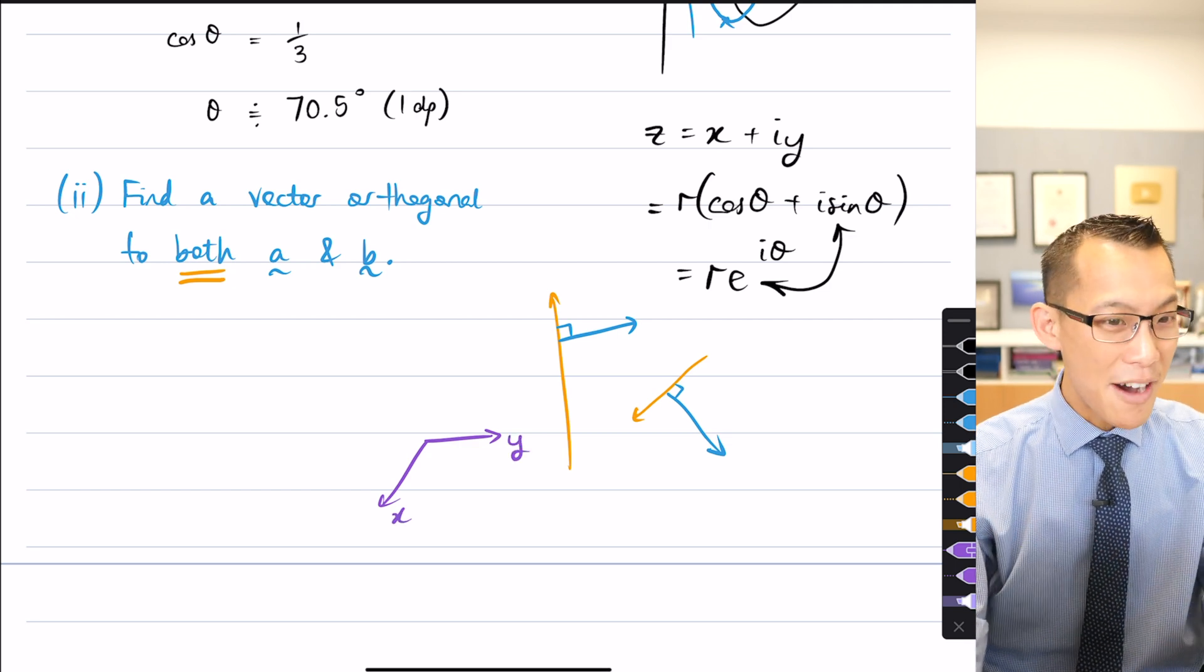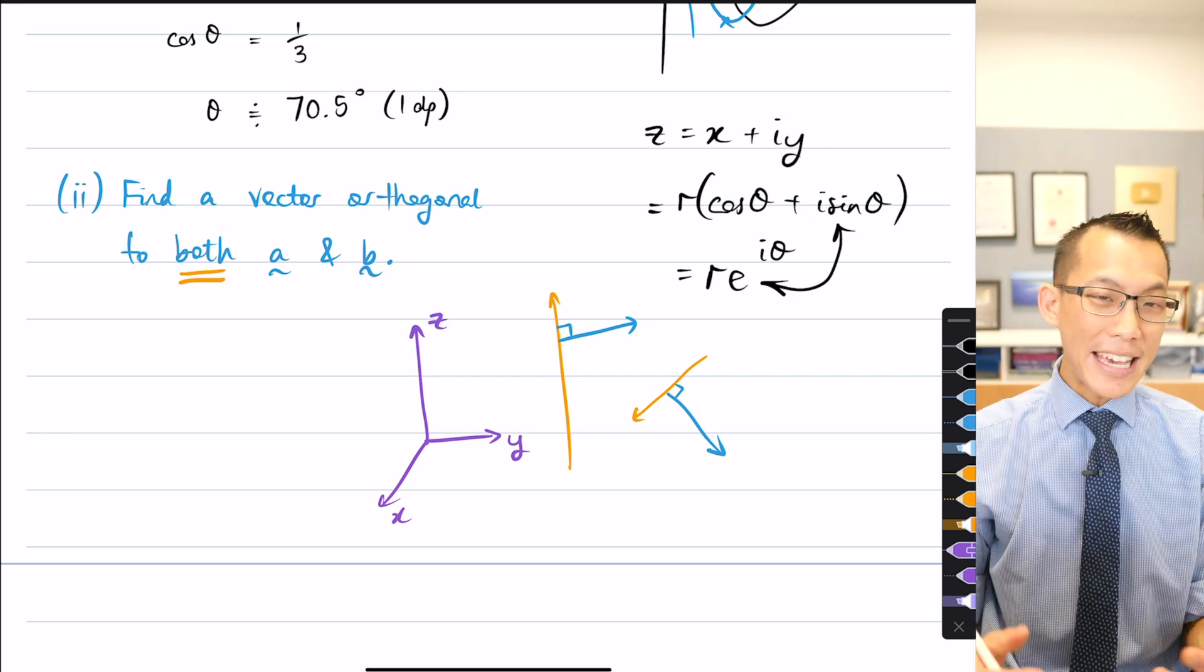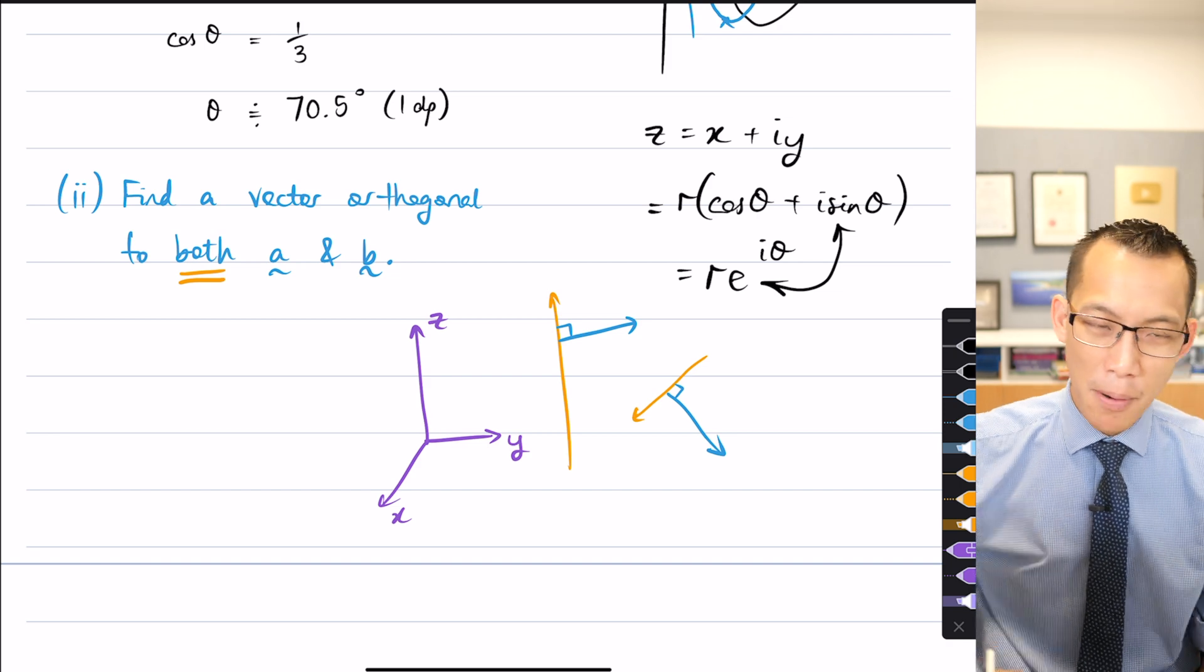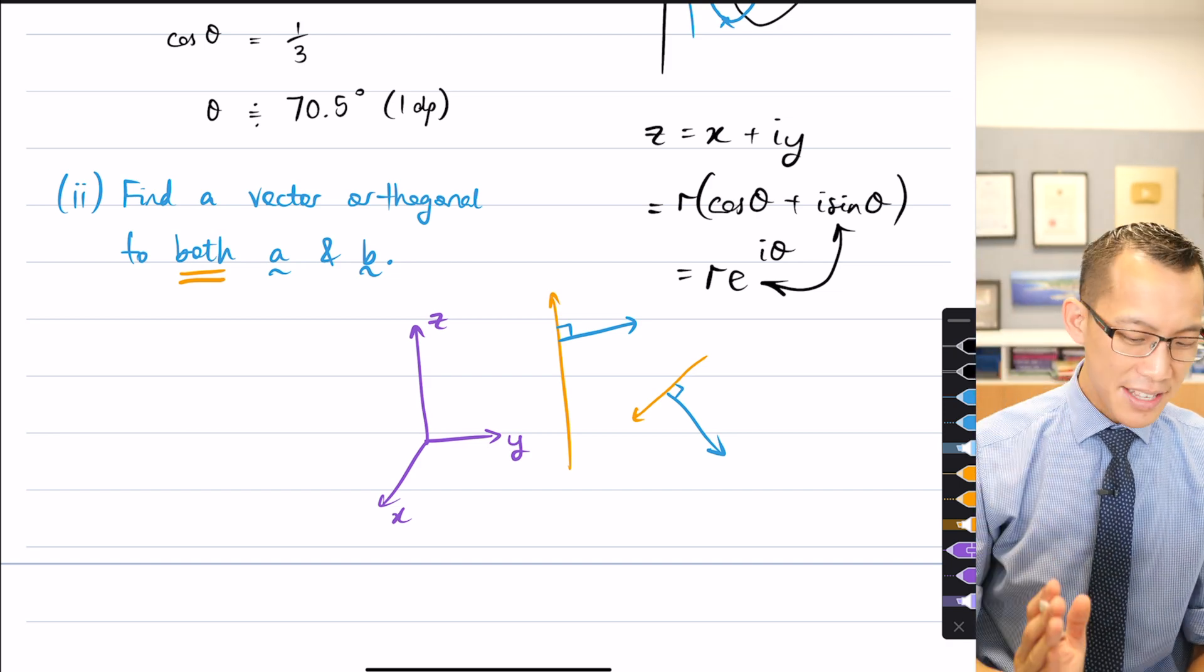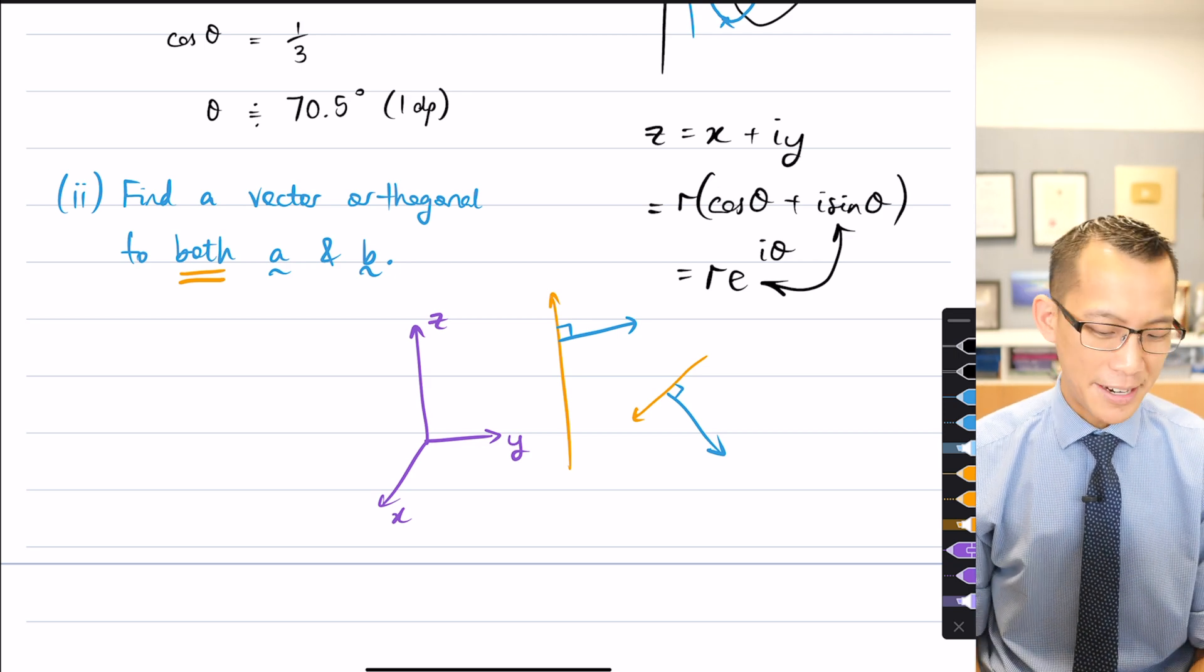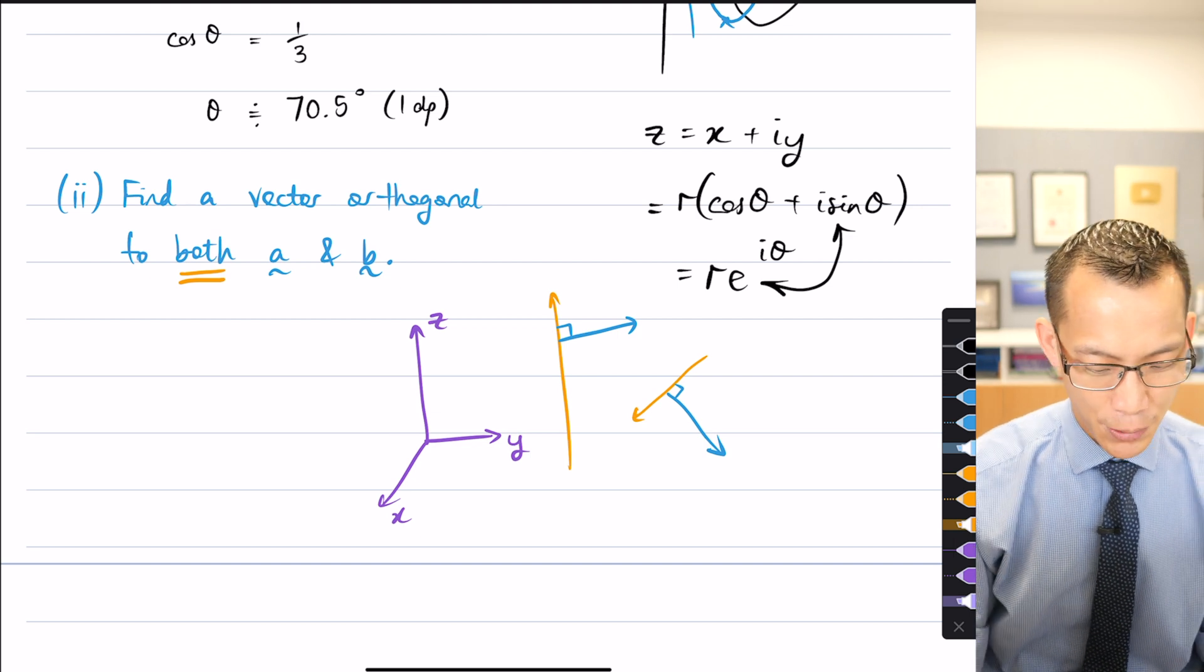And then I said, now imagine a third axis, right? The Z axis. Each of the axes can be thought of as a vector, right? So can you see the positive Z axis is a vector that's orthogonal to the X and the Y axes, right? So we can do this in three dimensions. We can't do it in two.